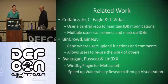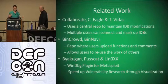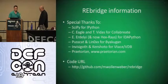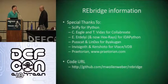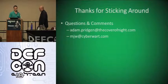Related work includes Collaborate, which uses a central repo maintaining IDBs allowing multiple users to make and share modifications. There's also BinCrowd from Dynamics, a repo where users upload comments and functions from IDA Pro and share them so others can reuse that work. There's also a project from BioCoogan, a vulnerability research and visualization tool that allows people to use Metasploit and WinDbg to speed up the vulnerability research process. Special thanks to SciPy for IPython, Chris Eagle and Tim Vidas for Collaborate, Hexrays for IDA Python, Postcat and Linux for BioCoogan, and Visigoth and Concerto for Vtrace. The code and slides are available from Matt's GitHub link.